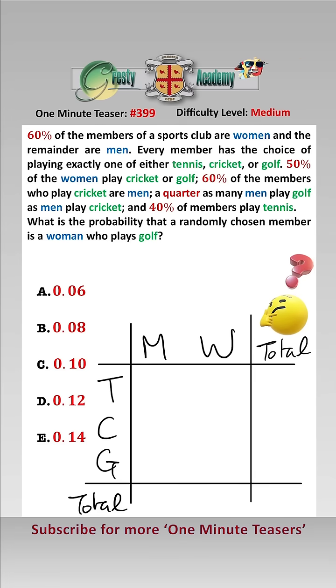The easiest way to solve a question like this is to assume that there are 100 members. So 60% of the members are women, which would mean there are 60 women and therefore there are 40 men.